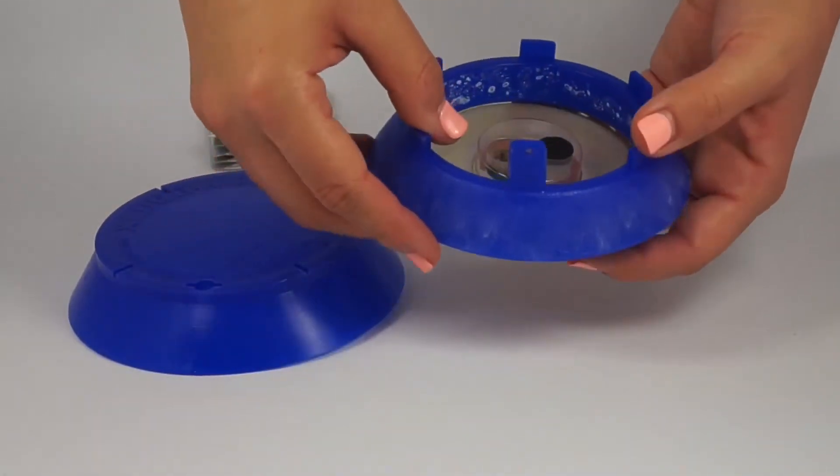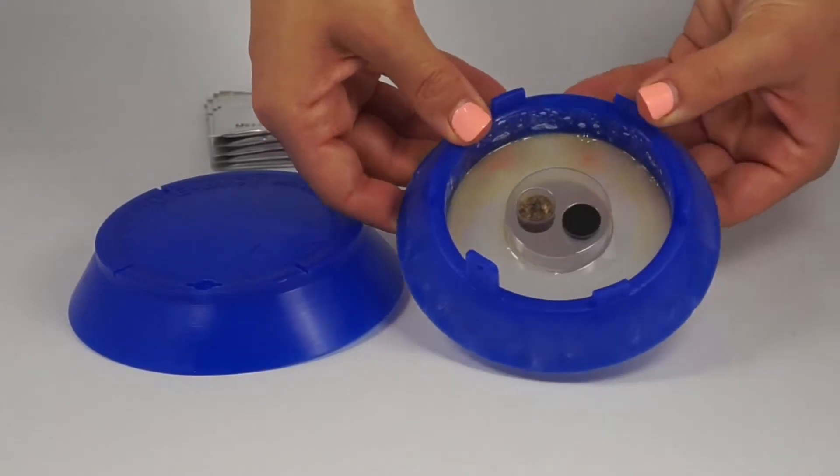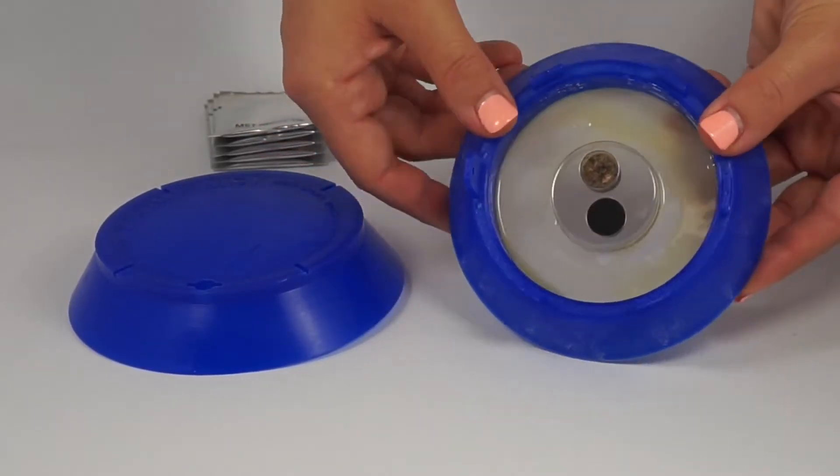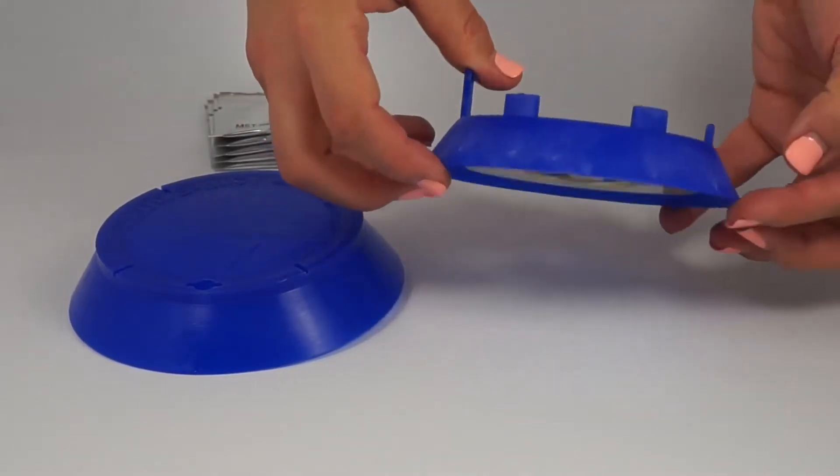Second, you take the oil cartridge and click it into the bottom of the base of the trap. As you can see, the cartridge attaches very easily to the base.